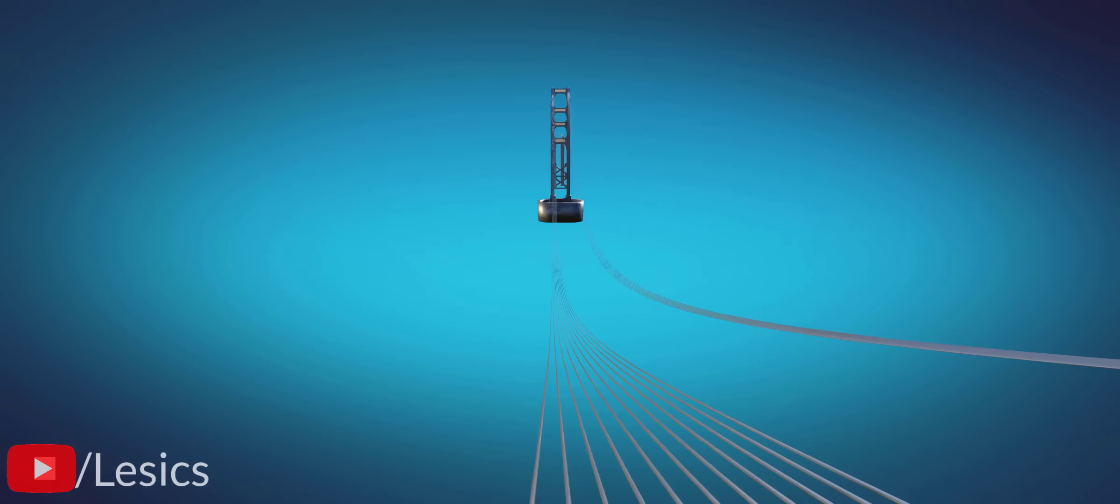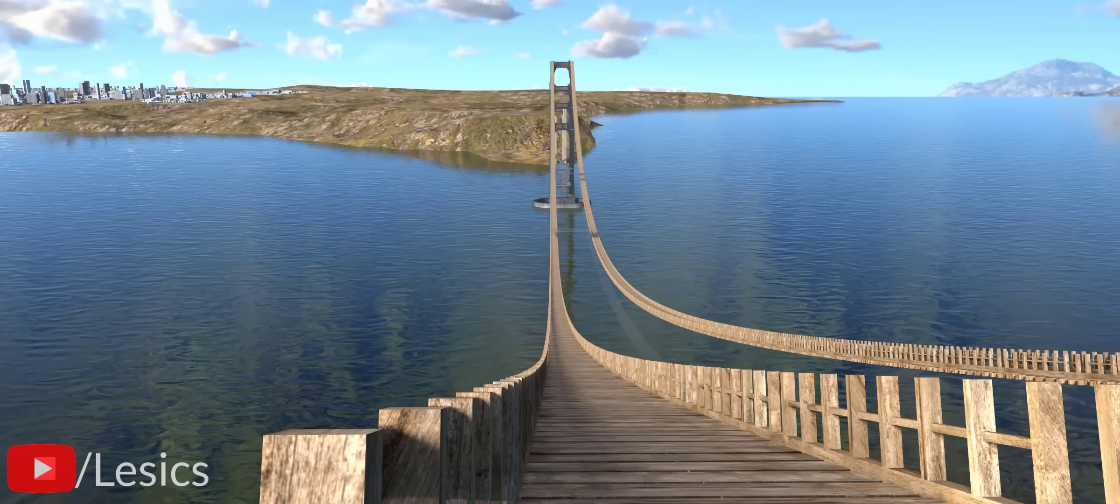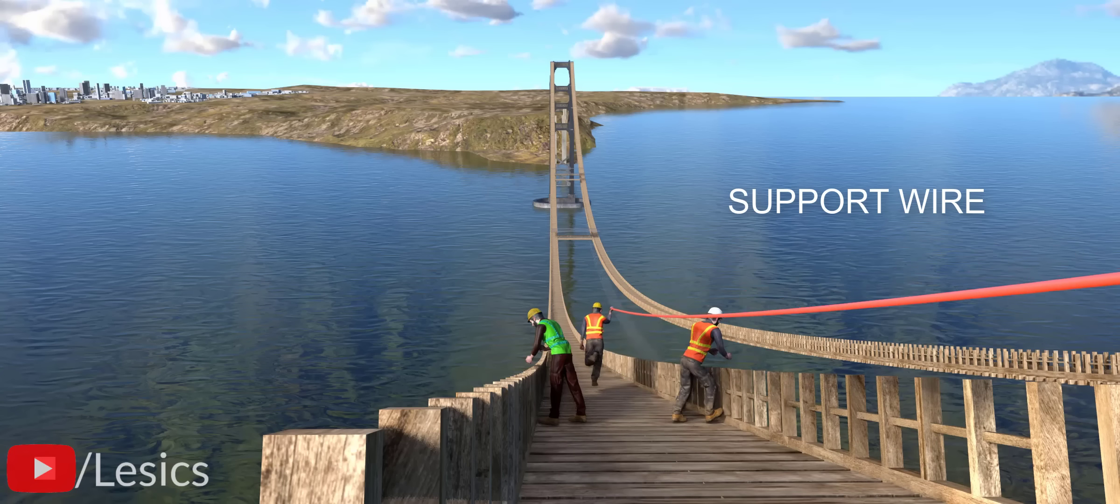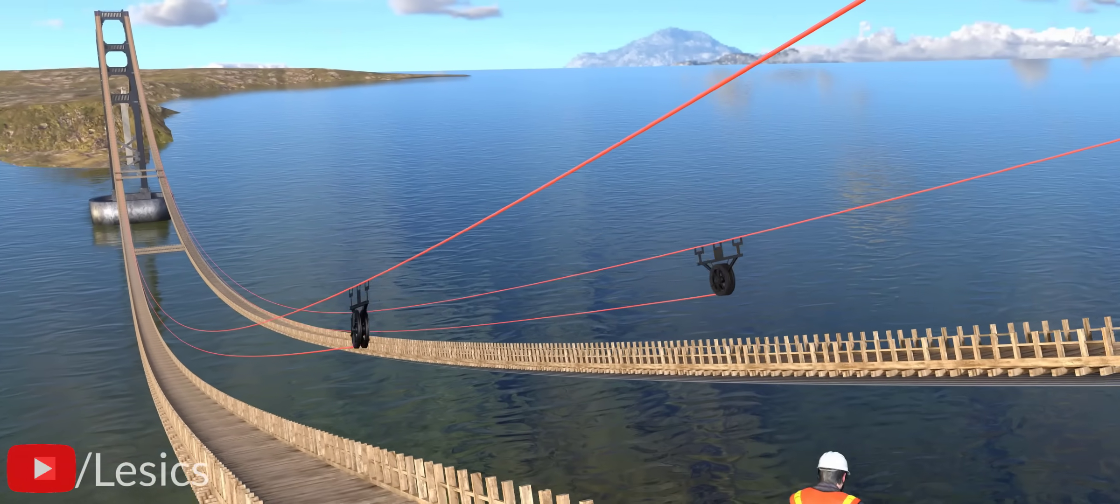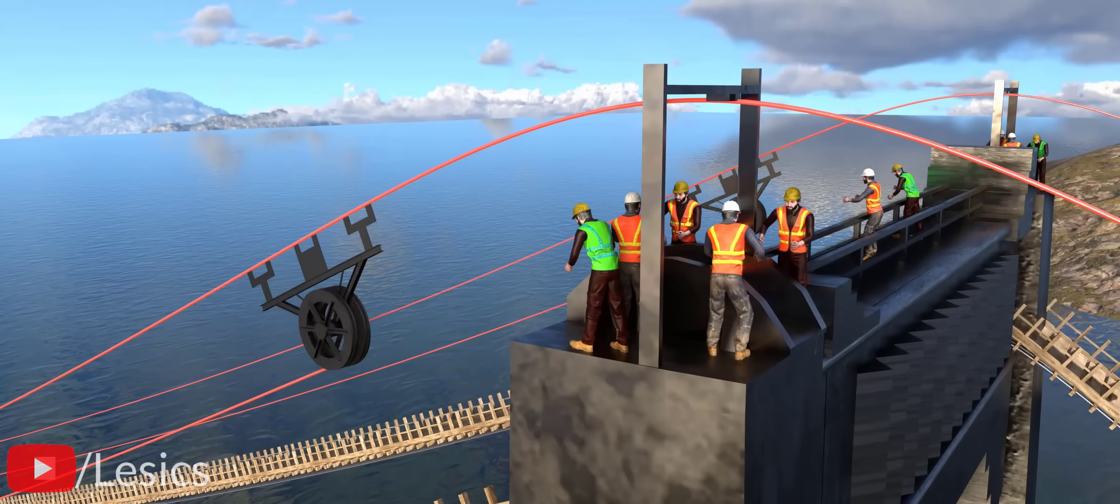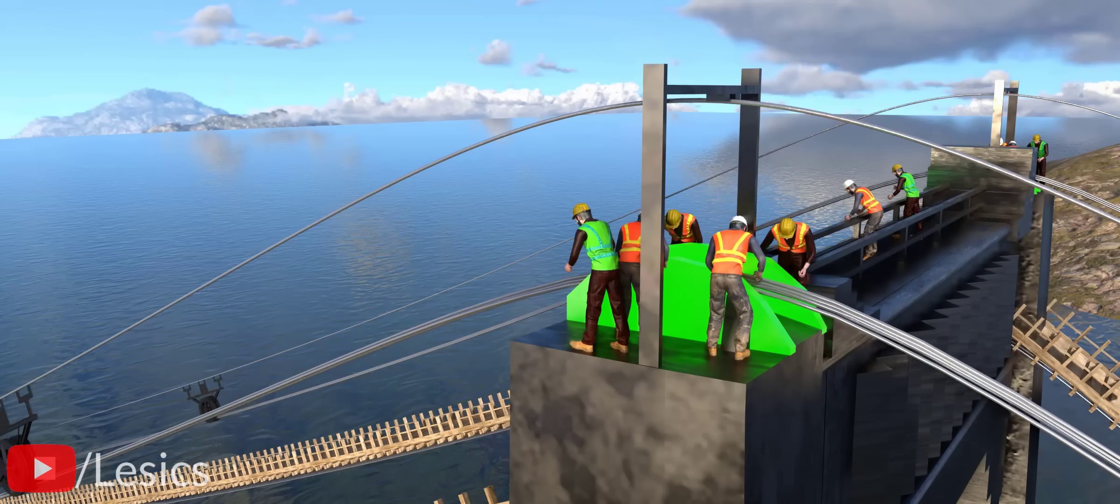To start laying these cables, workers first constructed a catwalk bridge for themselves. At first, workers laid a support wire. The main cables made their journey via these spinning wheels. Furthermore, these small wires were passed over the tower through the cable saddle one by one and were then clamped by laborers.